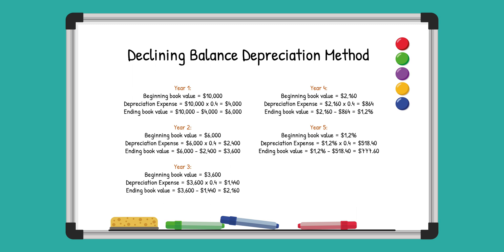By the end of five years, the machine's book value closely matches its salvage value. The declining balance method is a great way to handle depreciation for technology and similar assets.